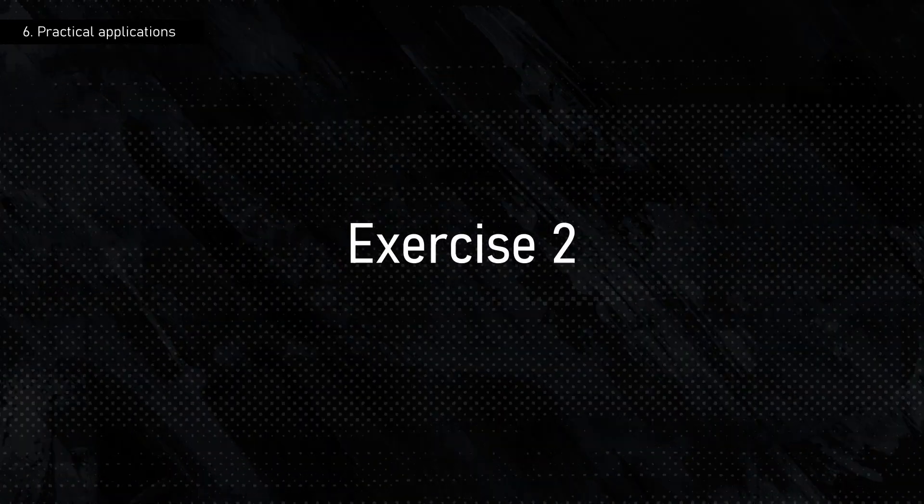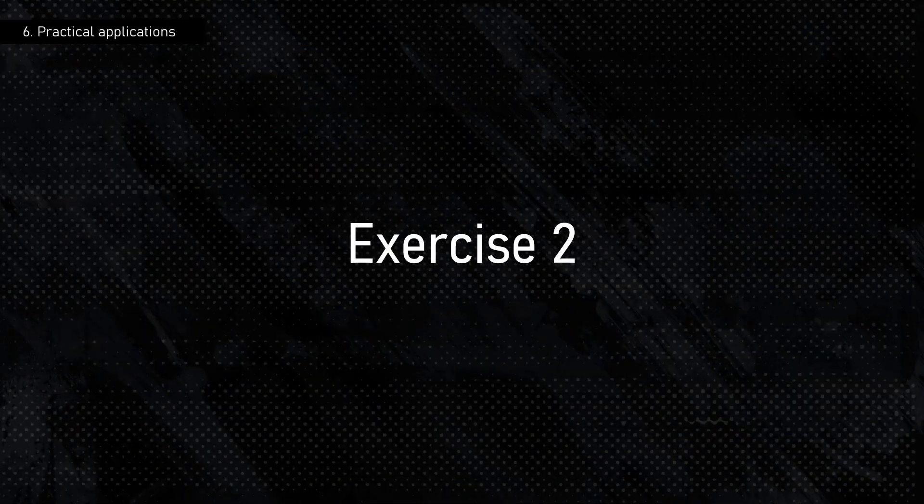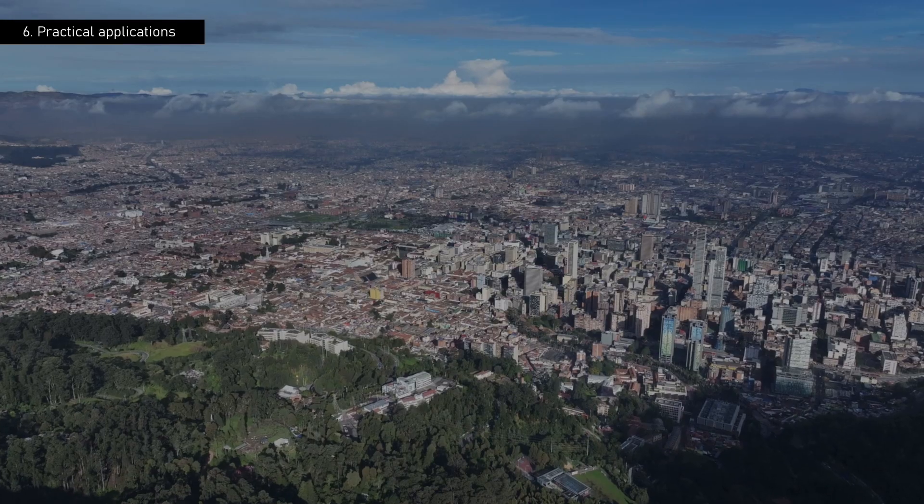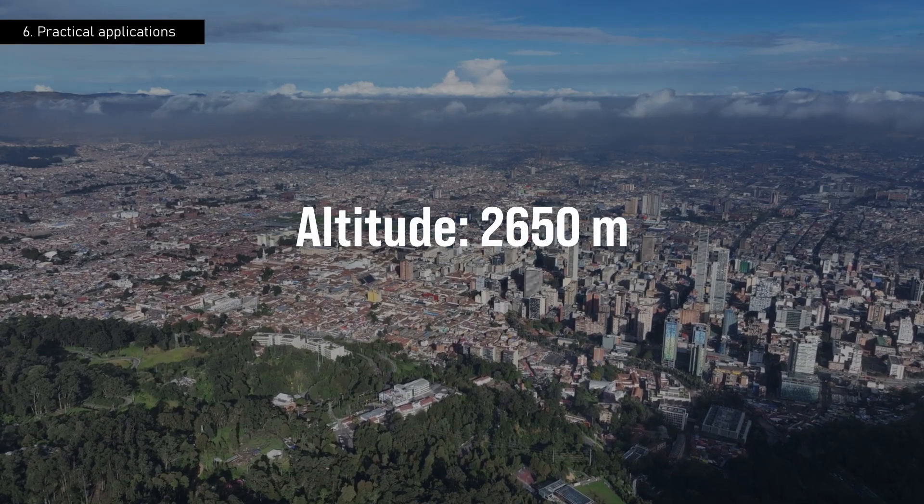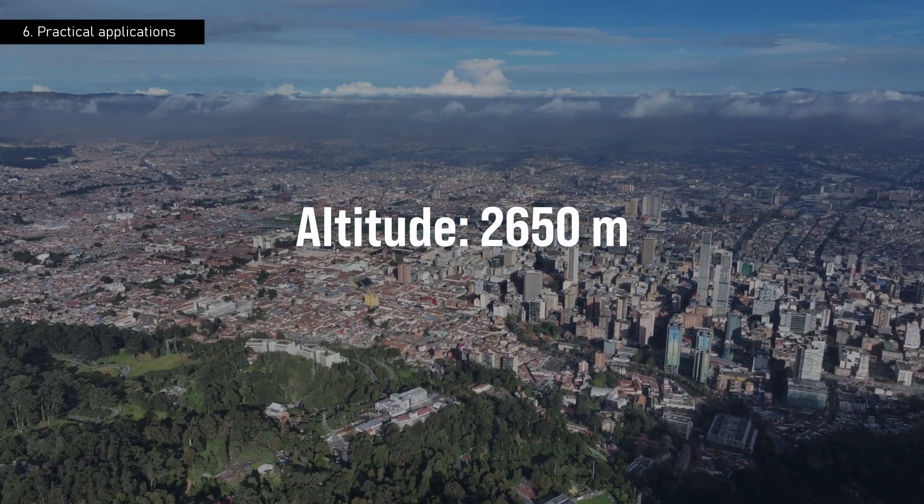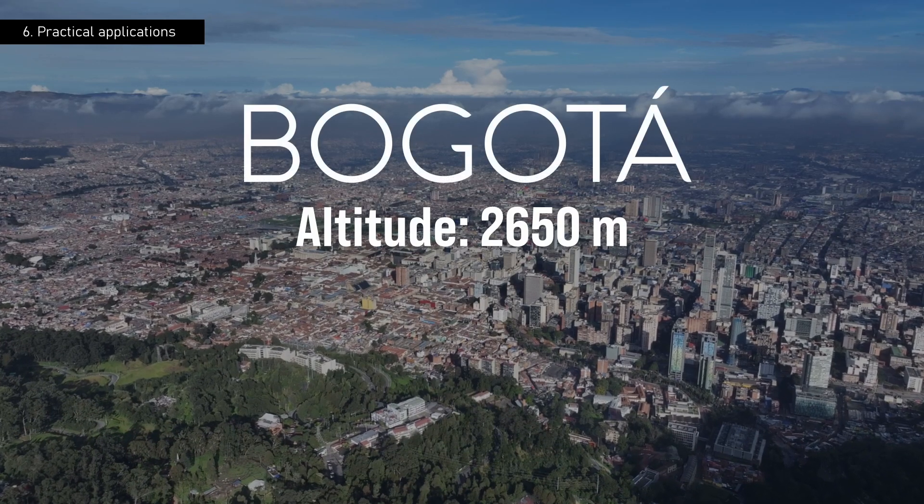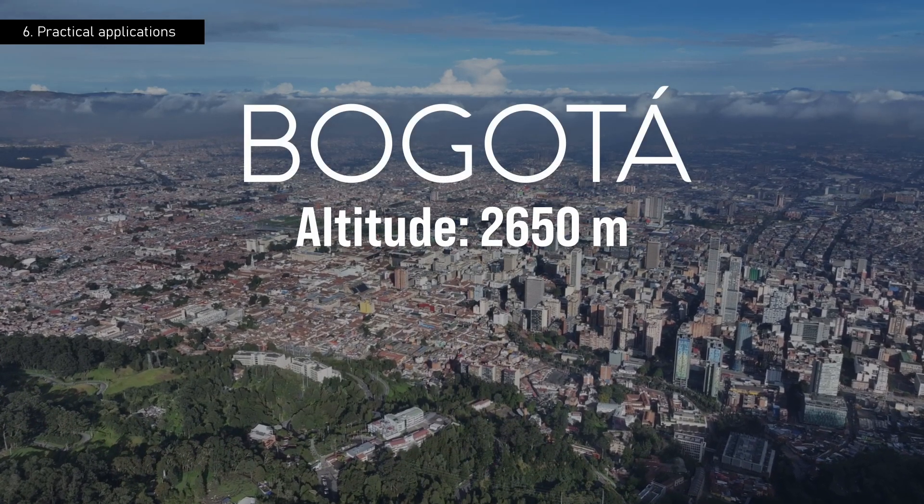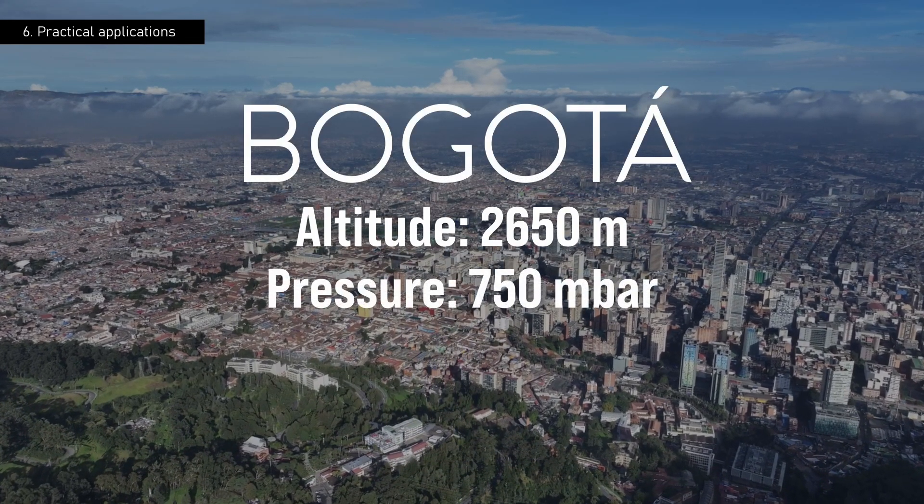Now consider a more specific example, where we calculate the maximum relative pressure of our vacuum pumps located at an altitude of 2,650 meters above sea level in the city of Bogota. Here, the atmospheric pressure is approximately 750 millibars.